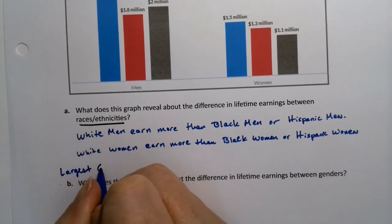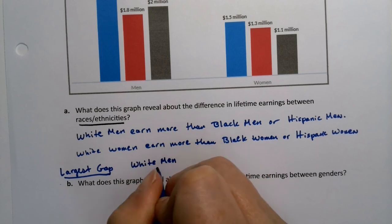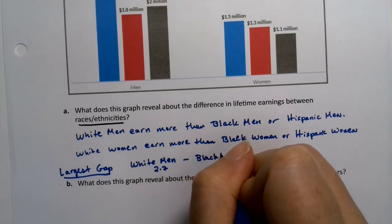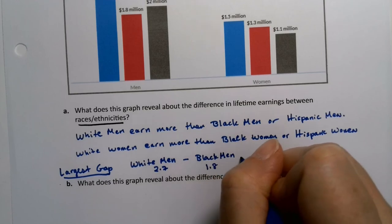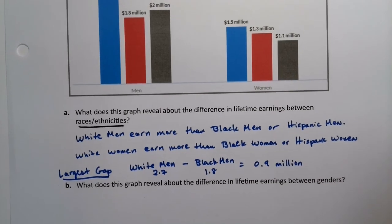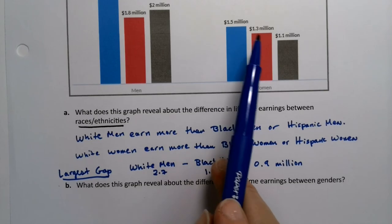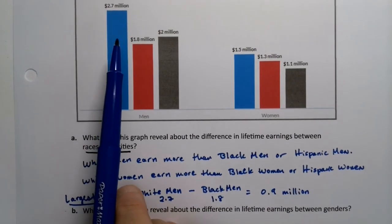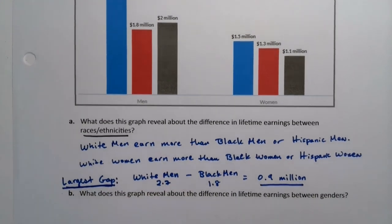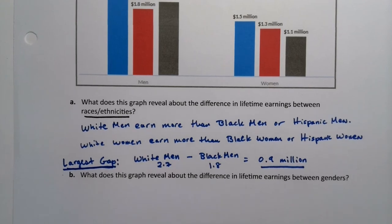The largest gap is 0.9 million dollars: white men at 2.7 million minus black men at 1.8 million equals 0.9 million dollars difference — almost a million dollars over a lifetime. There are disparities in the other groups as well, but not as large. For women to women it's 0.2 million, and from white men to Hispanic men it's 0.7 million. So the largest gap among race/ethnicities is from white men to black men at 0.9 million dollars.